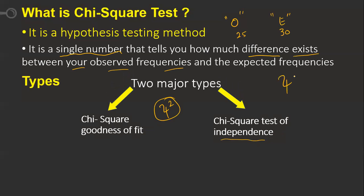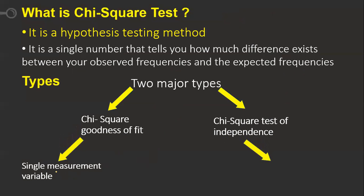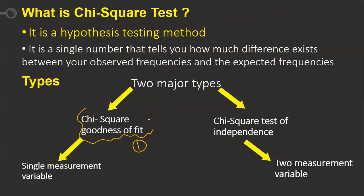The chi-square statistic is denoted by the symbol chi-square (χ²). The key difference between the two types: chi-square goodness of fit uses a single measurement variable, whereas the chi-square test of independence uses two measurement variables. Today we will study only the goodness of fit; the test of independence will be covered in the next video.